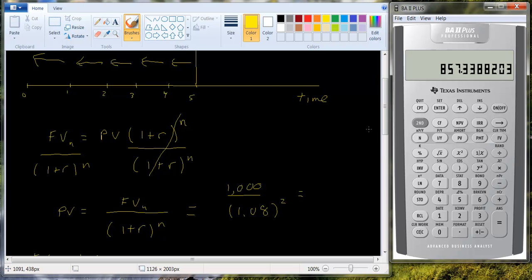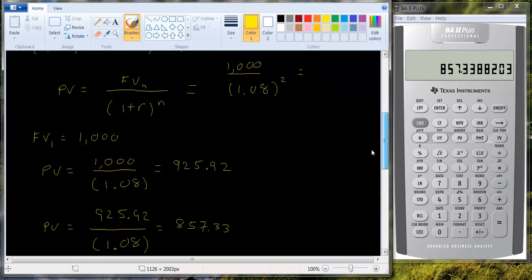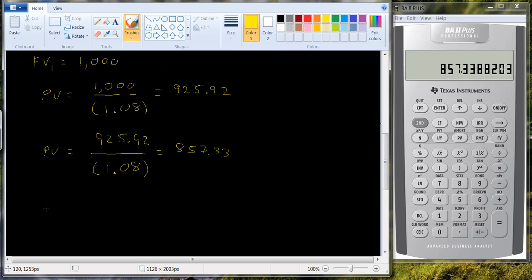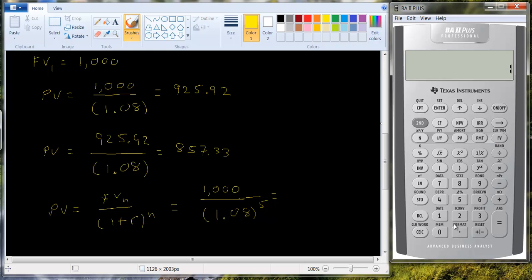So if we want to know what the present value of that thousand received in year five is. So here we have the present value equals the future value in year n divided by one plus the interest rate raised to the nth power. The future value in year n, this is year five, is one thousand. We're going to discount by or divide by one point zero eight raised to the fifth power. And we'll get one point zero eight.